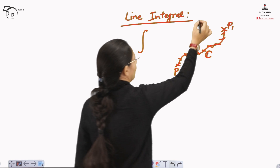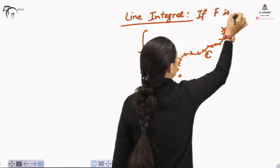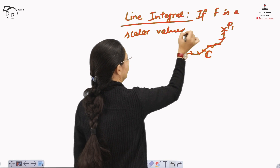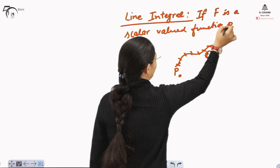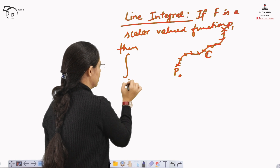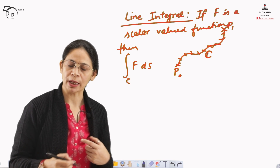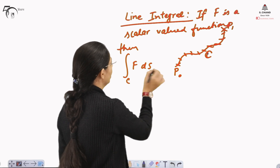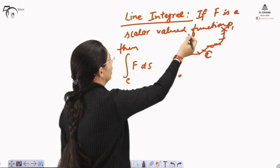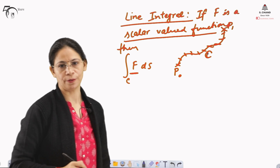If F is a scalar valued function, then this integration can be written as ∫C F dS. We cannot take dX because it is a curve, so this needs to be taken as arc length. This will be called the line integral of scalar valued function if F is the scalar valued function.